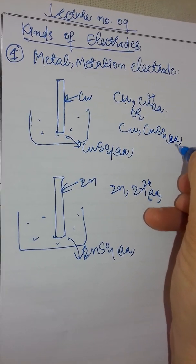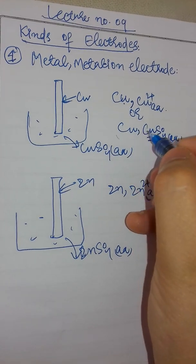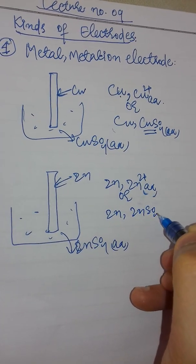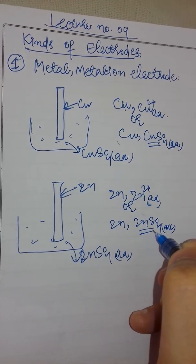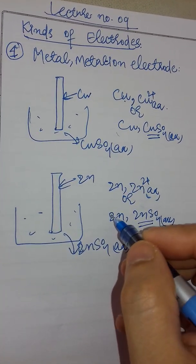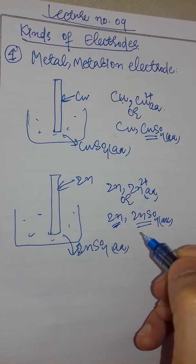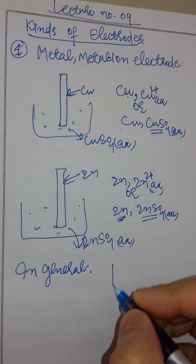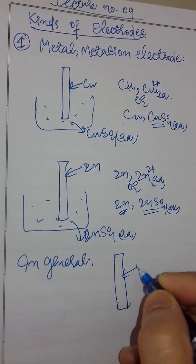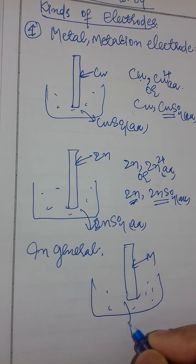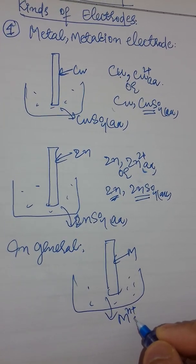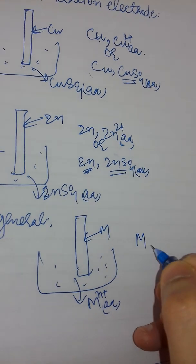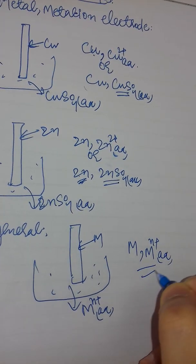It's understood that in this solution, there are its own ions — Zn²⁺ ions. You can also write it as Zn | ZnSO₄ aqueous, because in this electrolyte solution there are Zn²⁺ ions. In general, if you have a metal M dipped in a solution or electrolyte containing M^n⁺ ions, the schematic representation is: M | M^n⁺ aqueous. This is the general schematic representation of this kind of electrode.